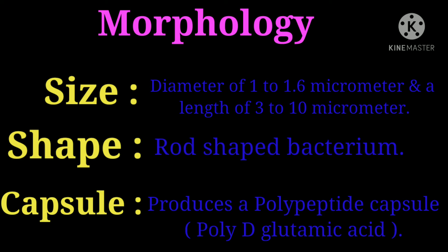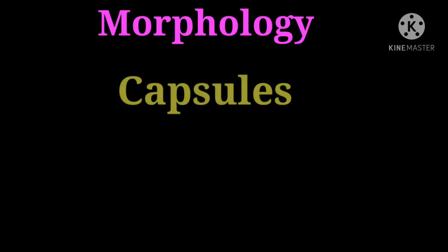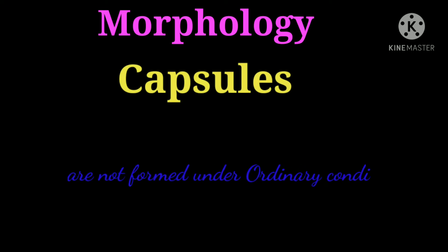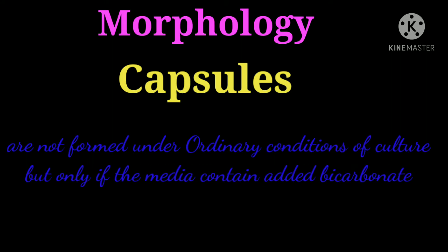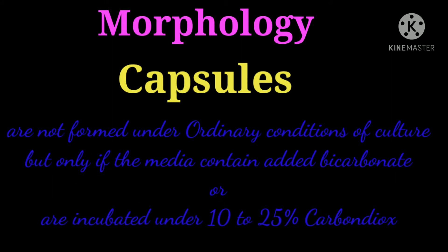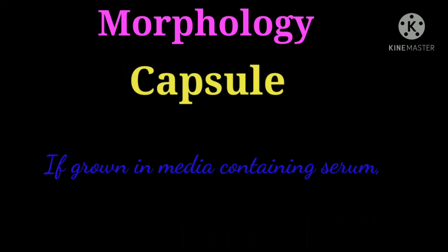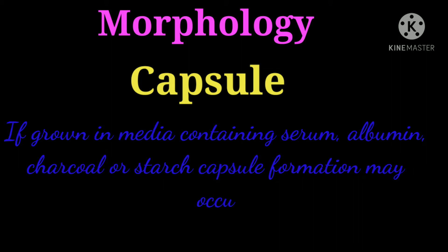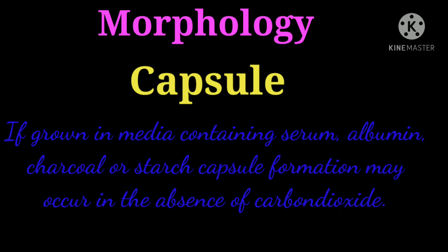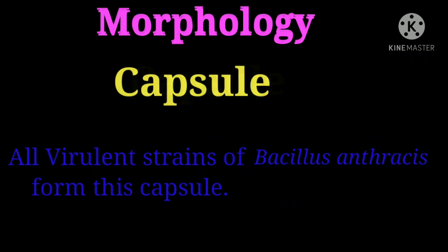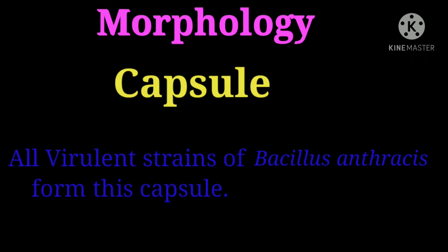Capsule: Bacillus anthracis produces a polypeptide — poly-D-glutamic acid capsule — that protects it from phagocytosis. Capsules are not formed under ordinary culture conditions, but only if the media contain added bicarbonate or are incubated under 10 to 25 percent carbon dioxide. If grown in media containing serum albumin, charcoal, or starch, capsule formation may occur in the absence of carbon dioxide.